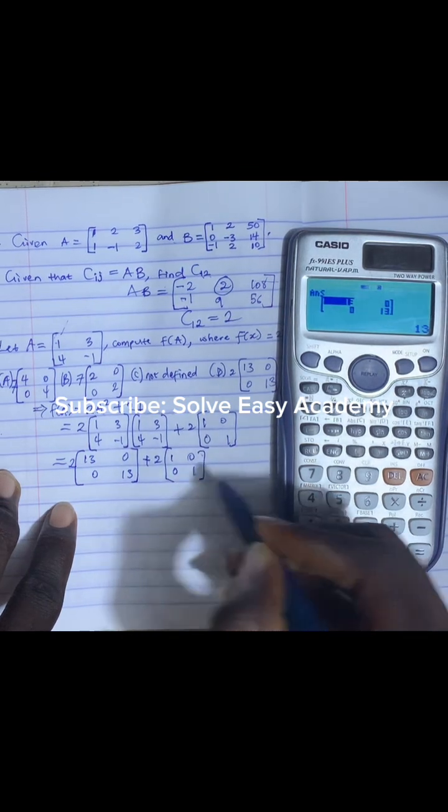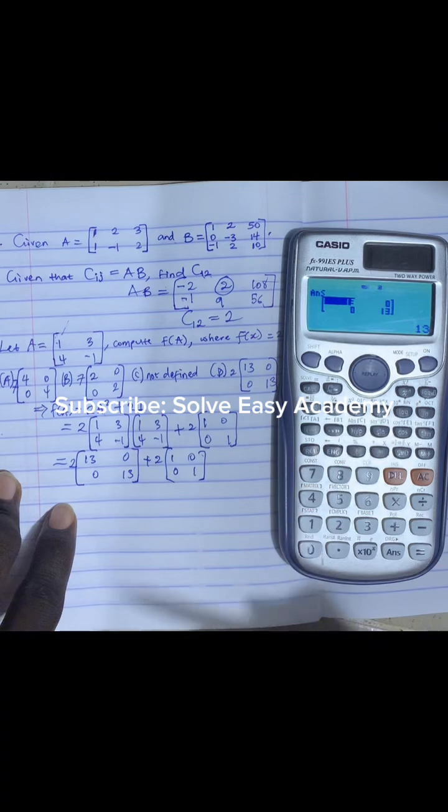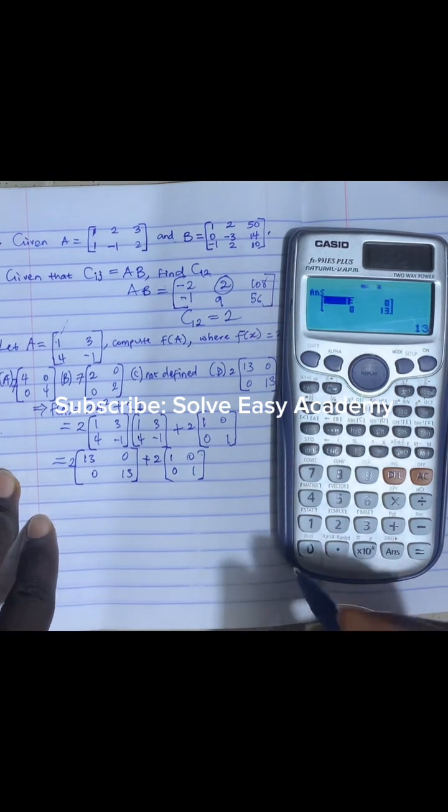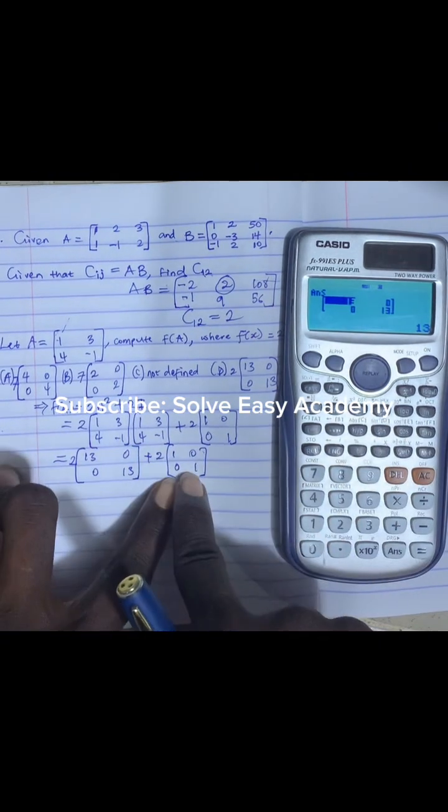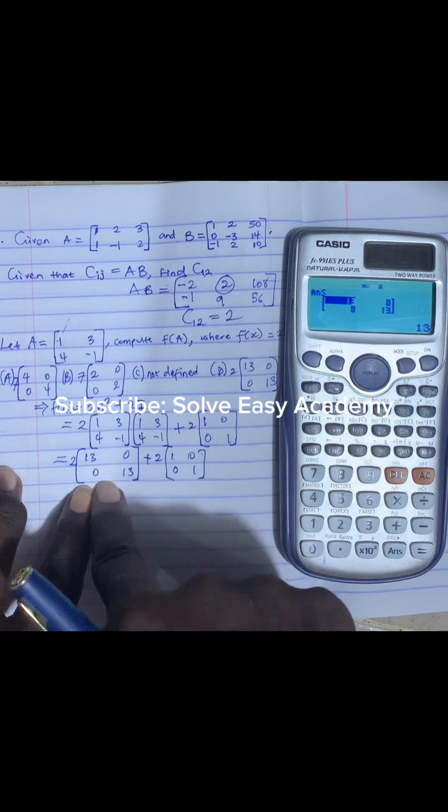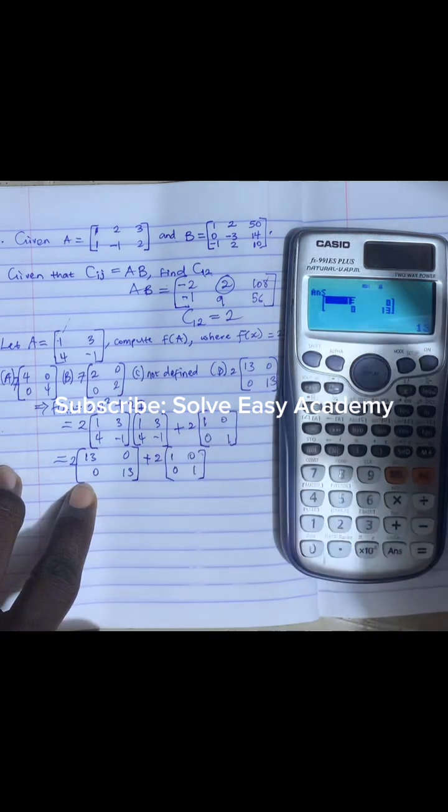We can go straight away to add the matrices together using a calculator by storing this to be another matrix and storing this to be another matrix, but that will take time. All we have to do is multiply everything in the matrix by 2.